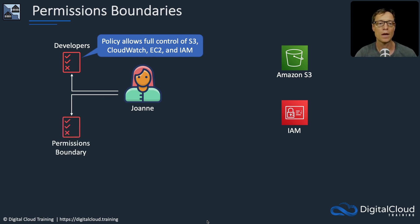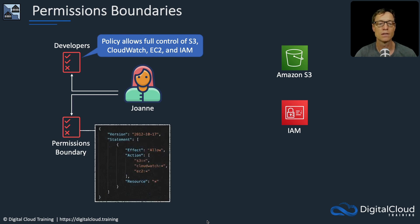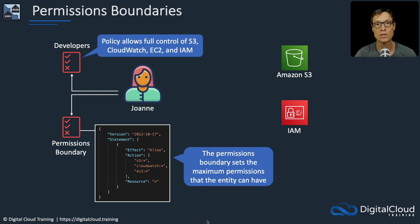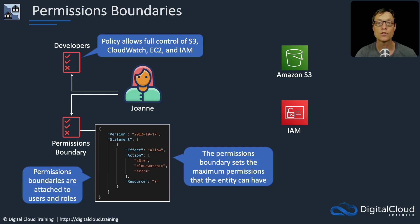But there's also a permissions boundary set. The permissions boundary sets the maximum available permissions that Joanne can have. We can see here we have an allow — the action is S3 star, CloudWatch star, and EC2 star, and then a wildcard for the resource. These can be applied to users and roles.